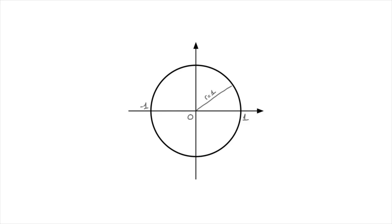The idea behind both the cosine function and the sine function can be explained using a point P which moves around the circumference of this unit circle. I'll add a generic point here in red and call that point P. If I add another point in blue, which I'll call A, then this angle X is the angle between the radius OA and the radius OP.